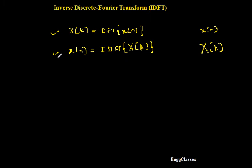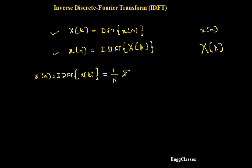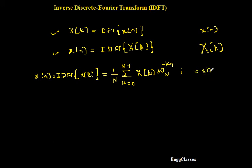So how do I get the expression for x of n? x of n is equal to IDFT of x of k. The expression for this is: one divided by N, summation k equal to 0 to N minus 1, X of k, W_N to the power minus k into n. Wherein n varies from 0 to N minus 1. This is the formula for IDFT.